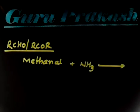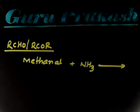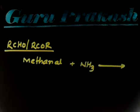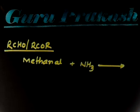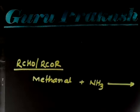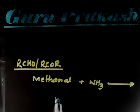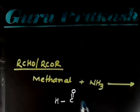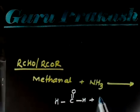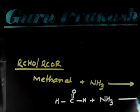What product do you expect for the following reaction? Let us find the structure of methanol. This is an aldehyde - alpha aldehyde. Methanol contains only one carbon, so methanol is HCHO, which is basically formaldehyde. So formaldehyde has the IUPAC name methanol. Now this is HCHO reacting with ammonia - what will be the product?